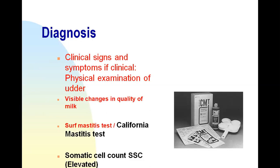In the Surf Mastitis Test, you take milk from each quarter in different cups, add a surf solution made from common detergent, and mix it with the milk sample. If the milk changes to a gel-like appearance, it indicates the milk contains a high somatic cell count, which gives a positive mastitis result. Somatic cell count can also be performed on individual milk samples or on bulk milk samples from the herd.